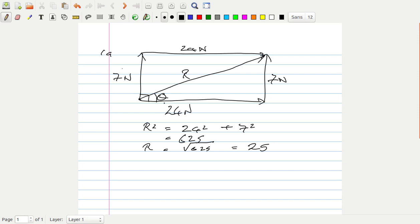Now we need to work out what theta is. Tan theta equals 7, that's the opposite, over the adjacent, which is 24. That's 0.2916 recurring.